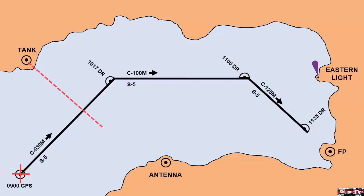Here you can see the tank is off our port beam on the first leg, and our antenna is off the starboard beam. We can shoot either one of these objects, and notice when we shoot the tank, how that line of position crosses the track line, and this shows our advance along our course.